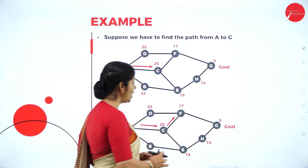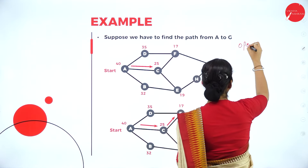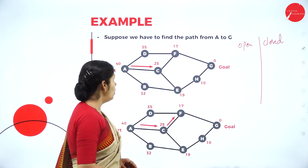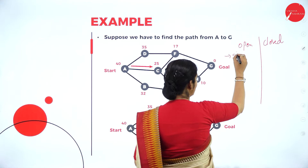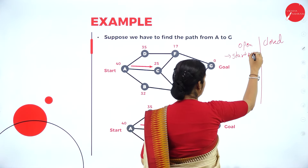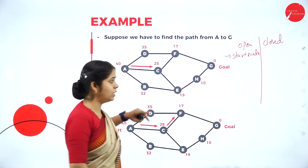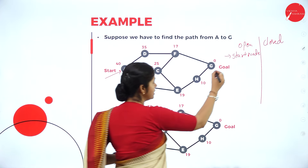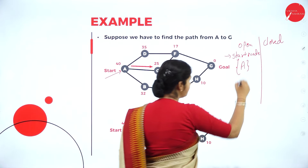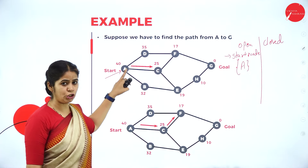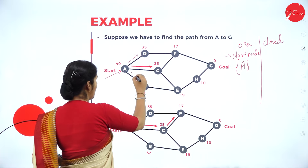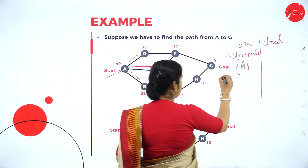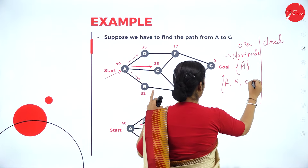Let's take an example. Here we create two lists: an open list and a closed list. We put the start node — that is the initial node — in the open list. The initial node in the given graph is A. After putting the initial node in the open list, we check all the paths A reaches: A reaches D, C, and B. So we have A, B, C, and D in consideration.